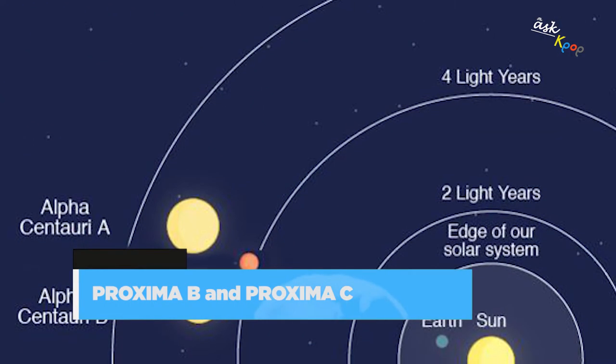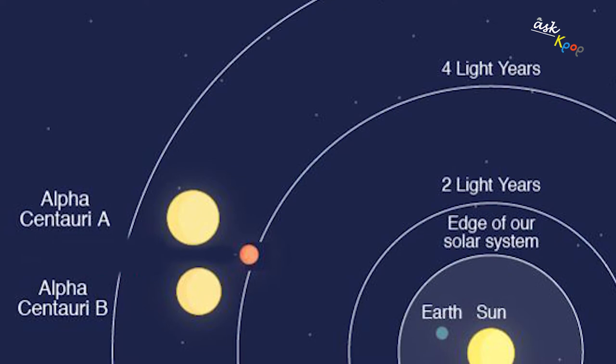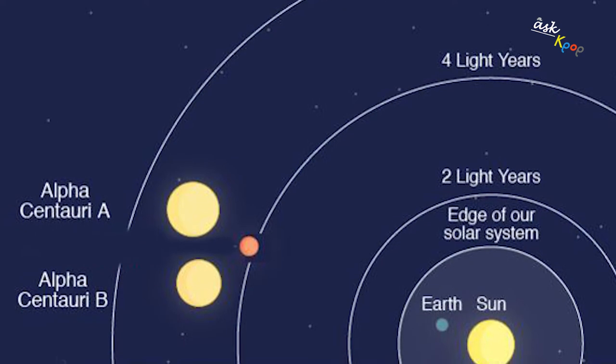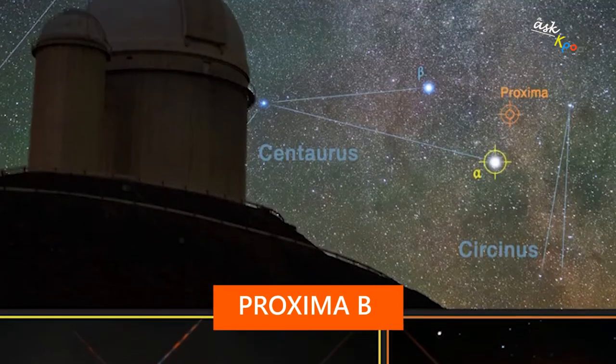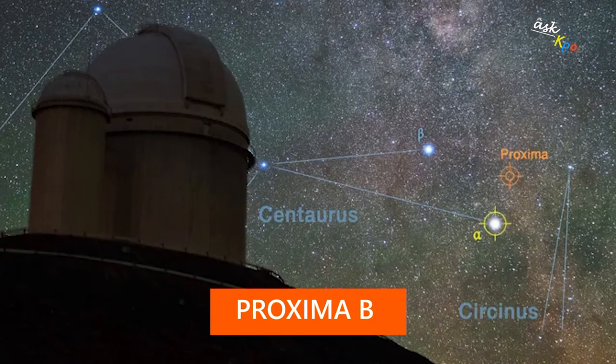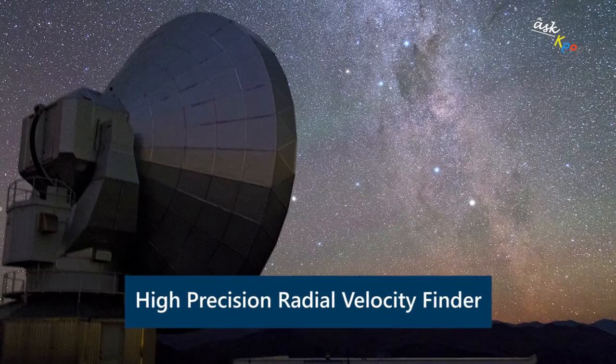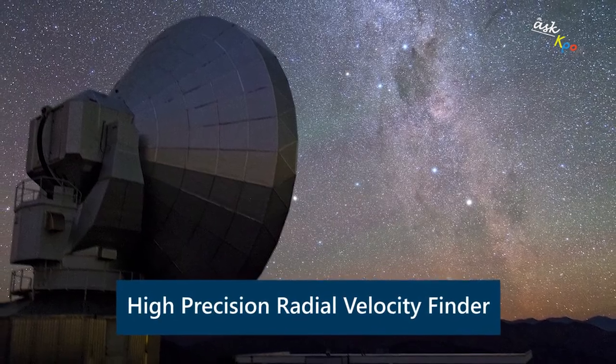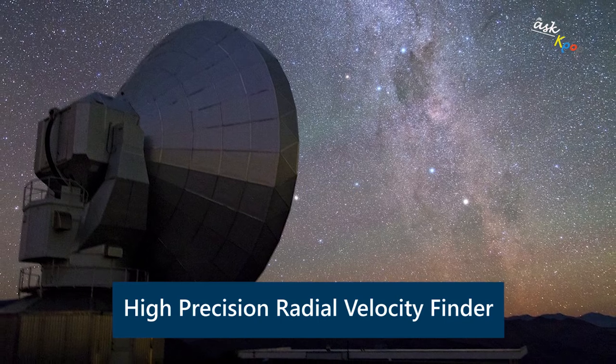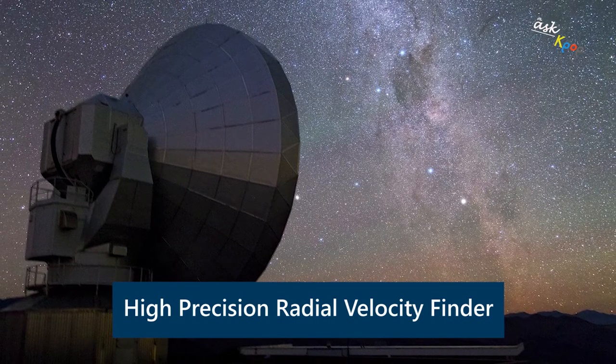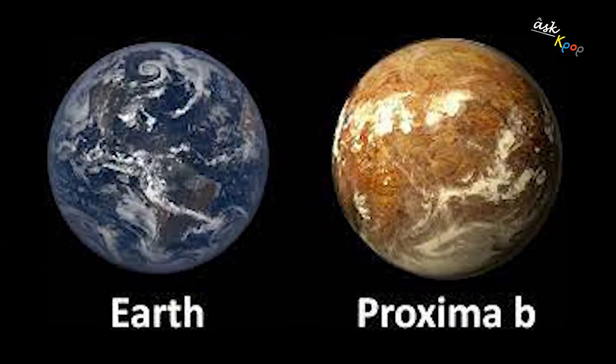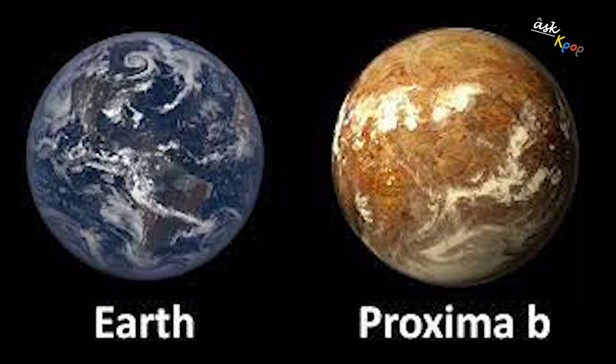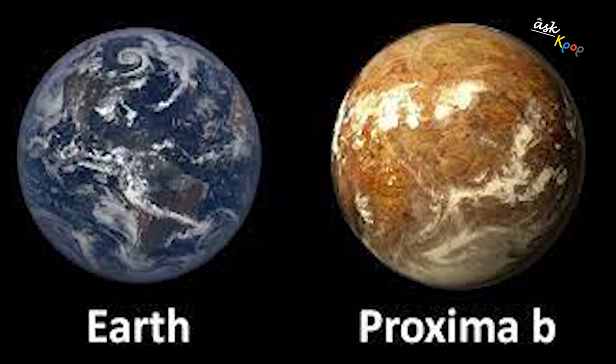It is known that astronomers have previously discovered Proxima b and Proxima c. Proxima b was discovered in 2016 after observations with the HARPS, high-precision radial velocity finder, spectrometer on the ESO 3.6-meter telescope at La Silla in Chile. Astronomers identified the exoplanet Proxima b, similar in size to Earth, orbiting the star Proxima Centauri.